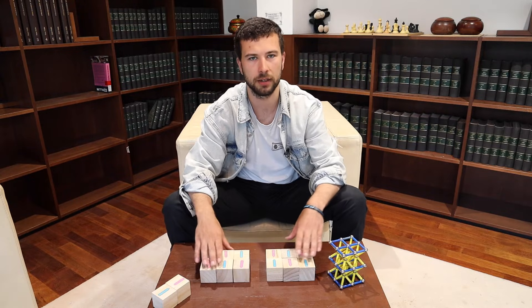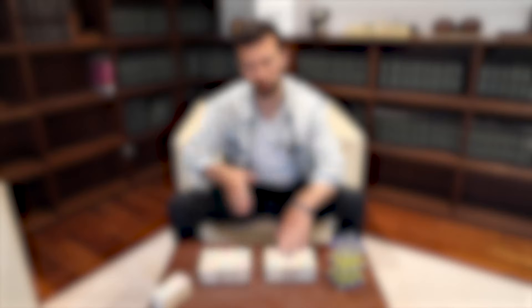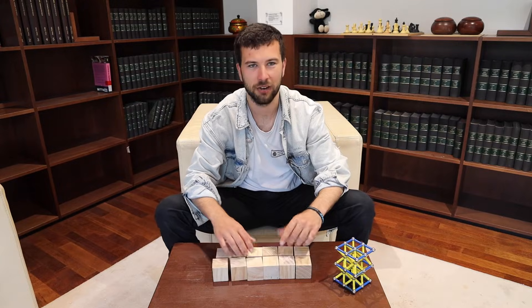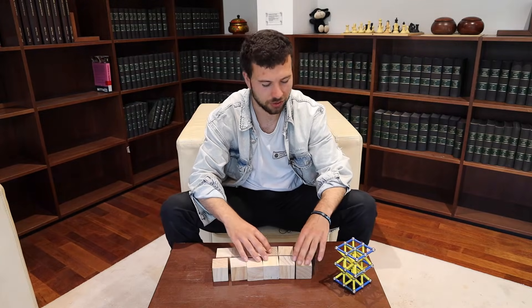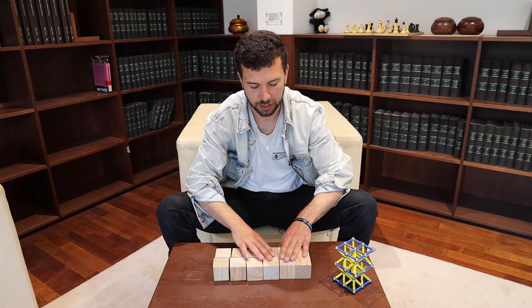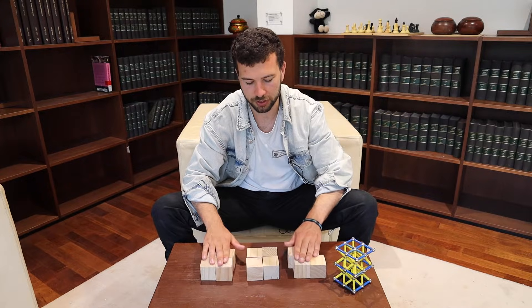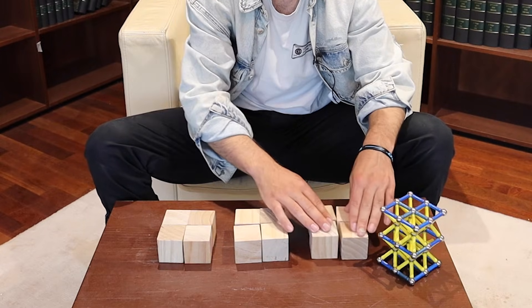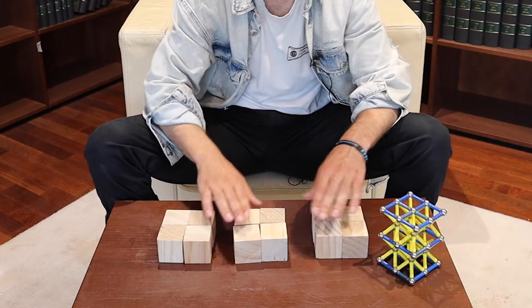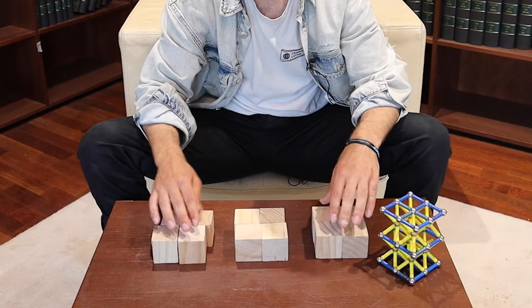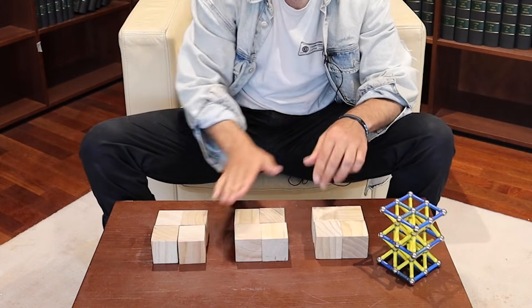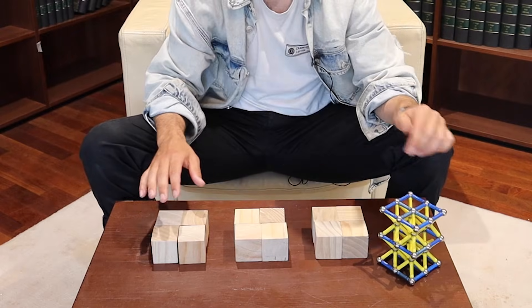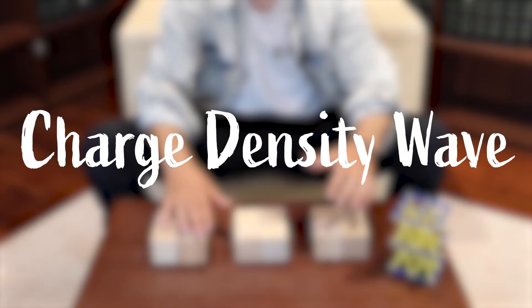More generically, if we just consider where the electrons are in the system and forget about their spins for a second, they can actually clump together in a periodic fashion. We can have regions where the electrons are and then regions where there's no electrons, or what we like to call holes, and these form a periodic density wave. This is what we call a charge density wave.